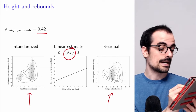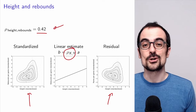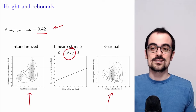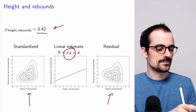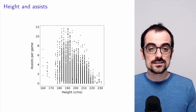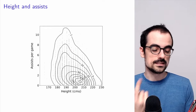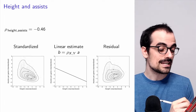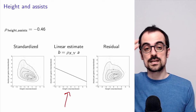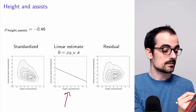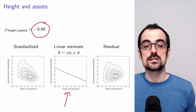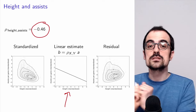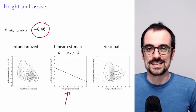Height and rebounds are positively correlated, which makes a lot of sense because taller players tend to grab more rebounds. If we look at assists, the scatter plot and kernel density estimate show that the linear estimate has a negative slope, indicating that the two quantities are negatively correlated — which makes sense because shorter players tend to give more assists in basketball.